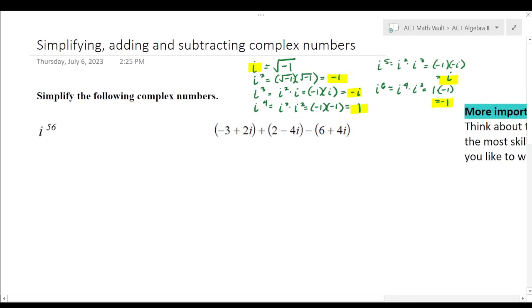All right. So, i to the 56th power. What we're trying to figure out is, would that be the i, the negative one, the negative i, or the one? And what we're going to do is a nice shortcut, which is you take the 56, you divide by four. And 56 is actually divisible by four. So, you end up getting a whole number, 14.